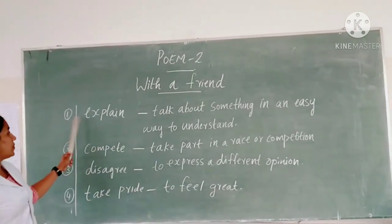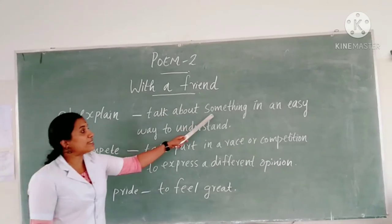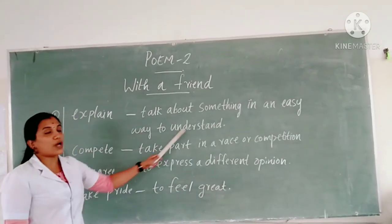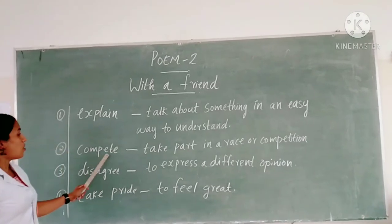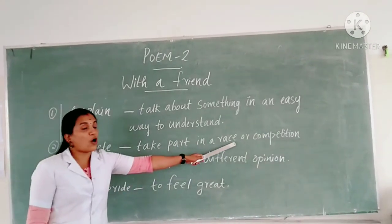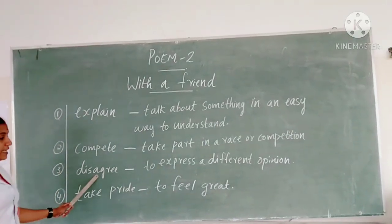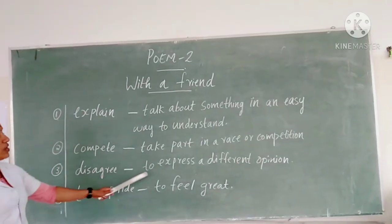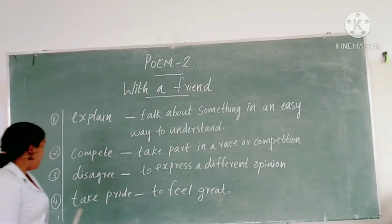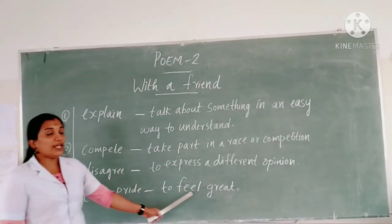Just repeat these meanings. Explain: talk about something in an easy way to understand. Second one, compete: take part in a race or competition. Third one, disagree: to express a different opinion. And last one, take pride: to feel great.